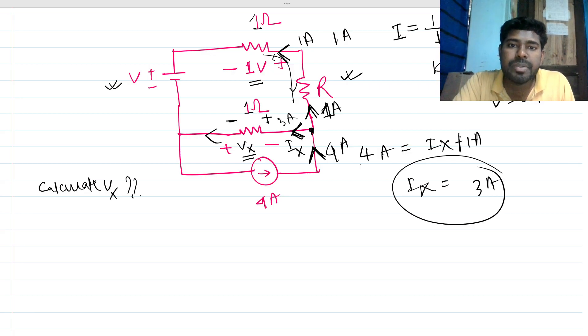...in this way will be this R into this I, right? So this will be 3 volt drop. But we need to find what is vx - plus here and minus here. You know this voltage drop will be inverse, right? So here in this way it is showing that the current is flowing in this way.